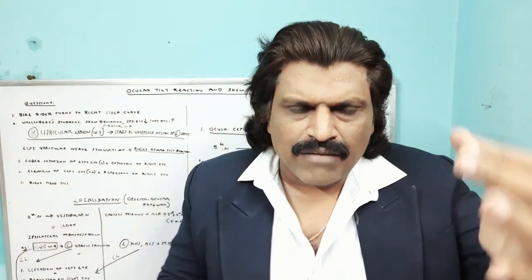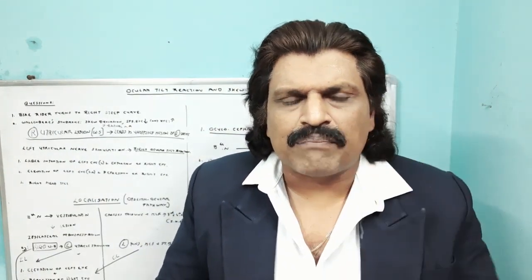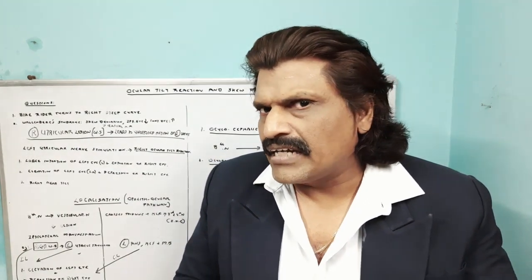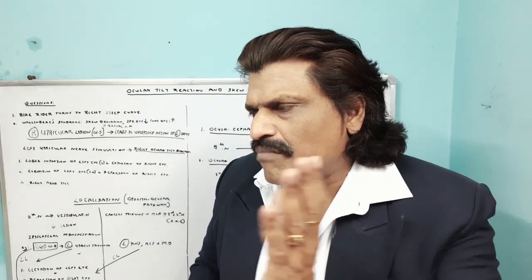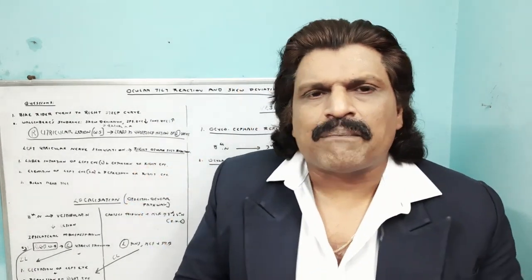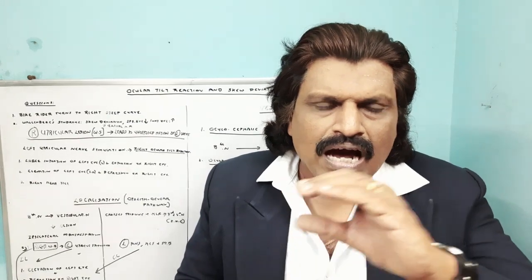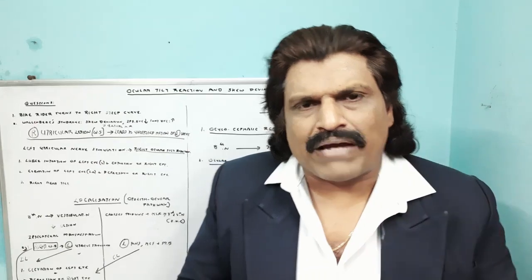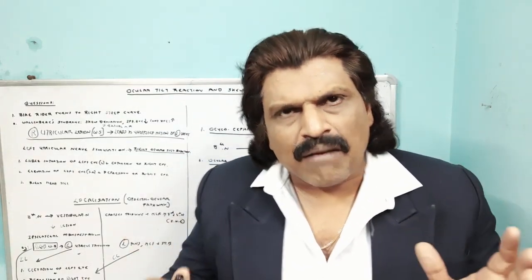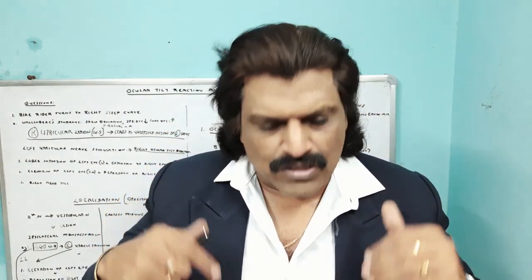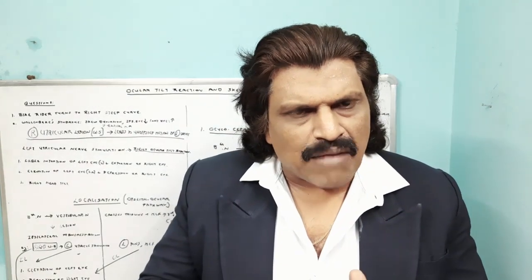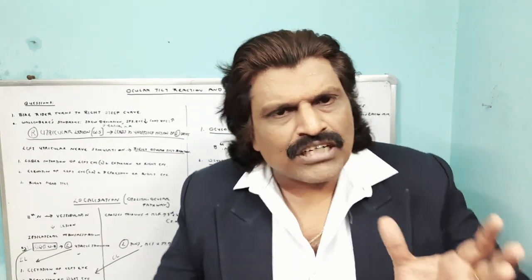When I look straight, the image falls on the fovea and it appears very sharp. But when I turn my head to the right and keep looking at that object, if my eyes also turn along with the head, the image appears blurred. Therefore, I should move the eyes in the direction opposite to the head movement but with equal magnitude. The same applies to vertical eye movements: when the head goes down, the eyes should go up; when the head goes up, the eyes should go down.